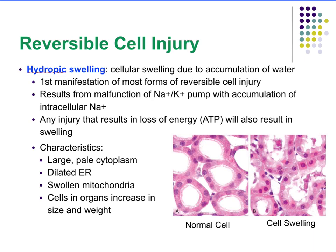Starting off with reversible cell injury — this is cell injury that thankfully can be reversed. The first type we're going to discuss, which is also the most common, is hydropic swelling. It has the word 'hydro' in it, so it should make you think of water. This is the accumulation of water within your cells, and it's the first manifestation of most forms of reversible cell injury. It results when there's a malfunction in your sodium-potassium pump.